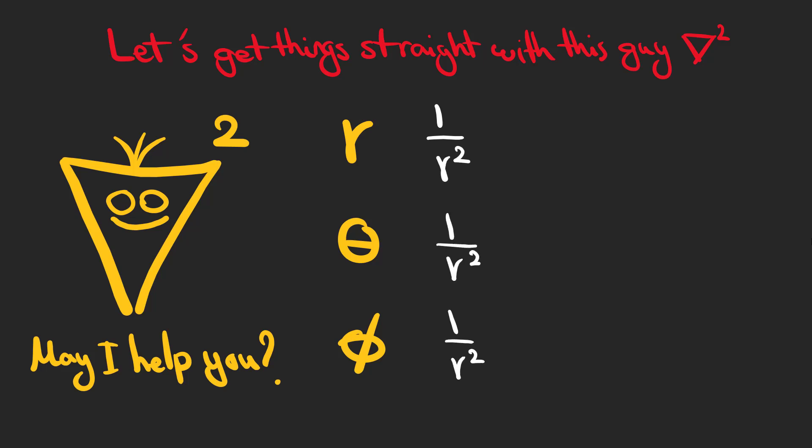For each one, we have 1 over r squared. Now, we multiply r, theta, and phi with sine to the power of 0, sine to the power of 1, and sine to the power of 2, respectively.